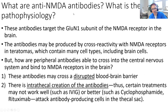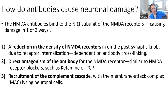NMDA antibodies target a subunit of the NMDA receptor in the brain. We think there's cross-reactivity with NMDA receptors in teratomas. How do they get from peripheral blood into the CNS? We think either through disrupted blood-brain barrier - the likeliest explanation - or antibodies are made intrathecally. When NMDA antibodies bind to receptors, they can reduce receptor density, antagonize the NMDA receptor similarly to ketamine or PCP, or recruit complement to lyse and destroy neuronal cells.